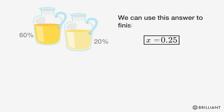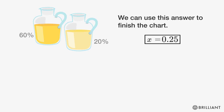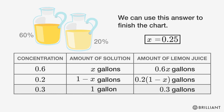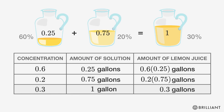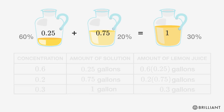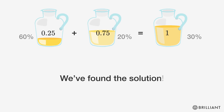We can use this answer to finish the chart — just plug in 0.25 for X. So we need 0.25 gallons of 60% solution and 0.75 gallons of 20% solution.